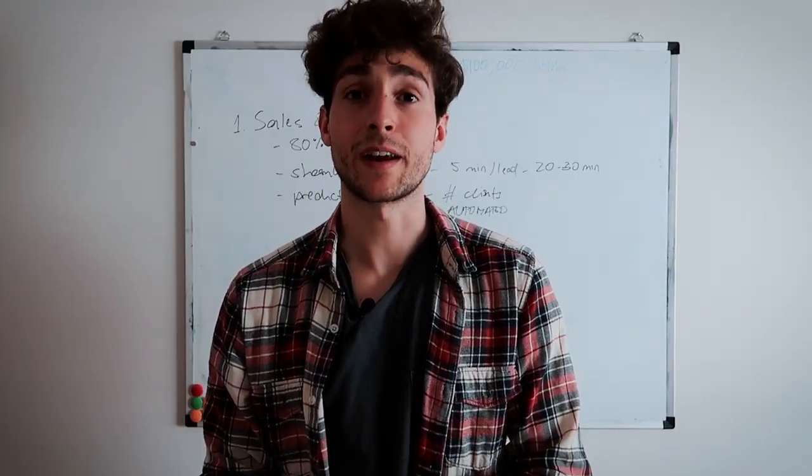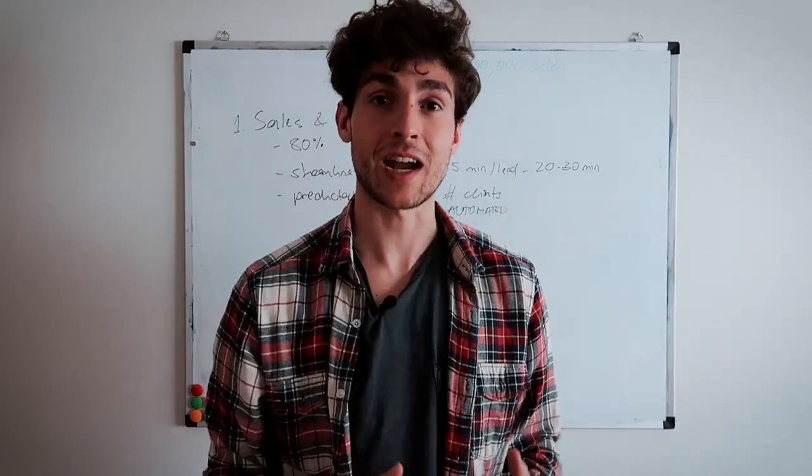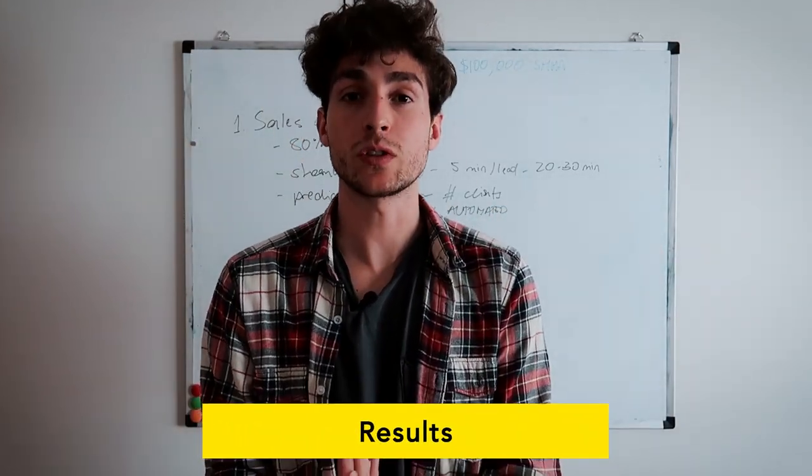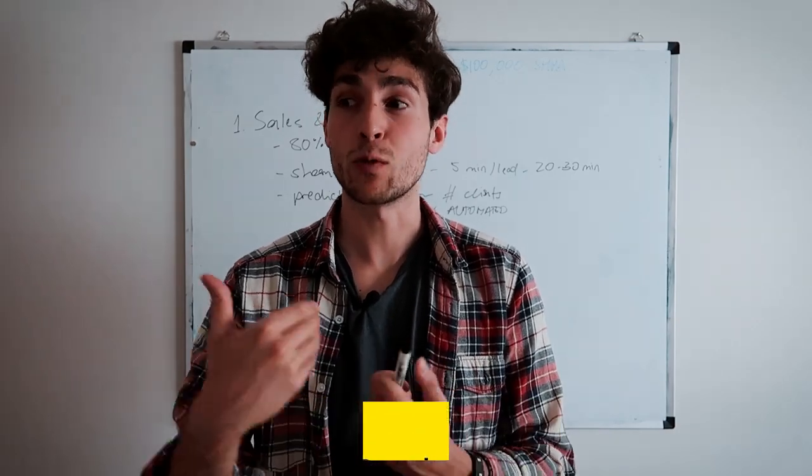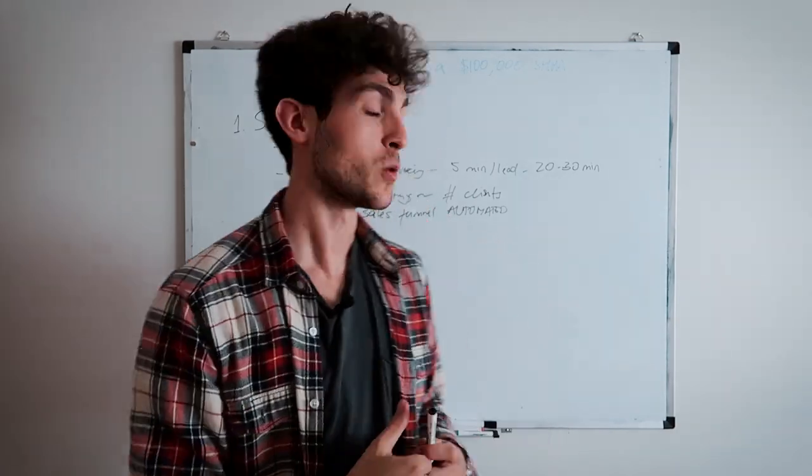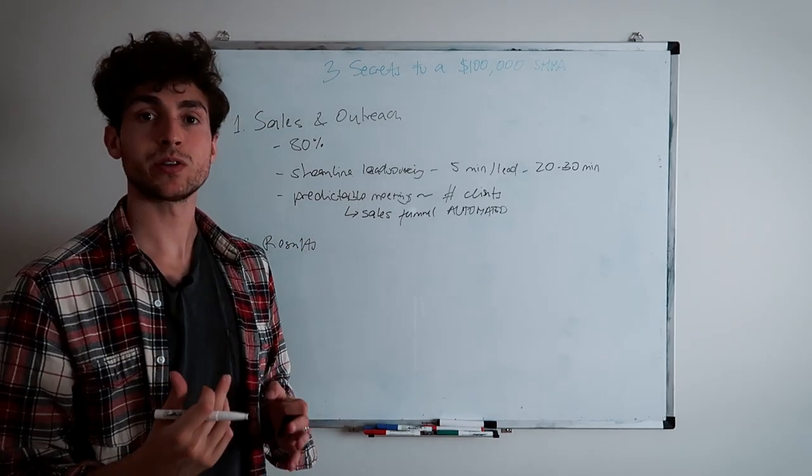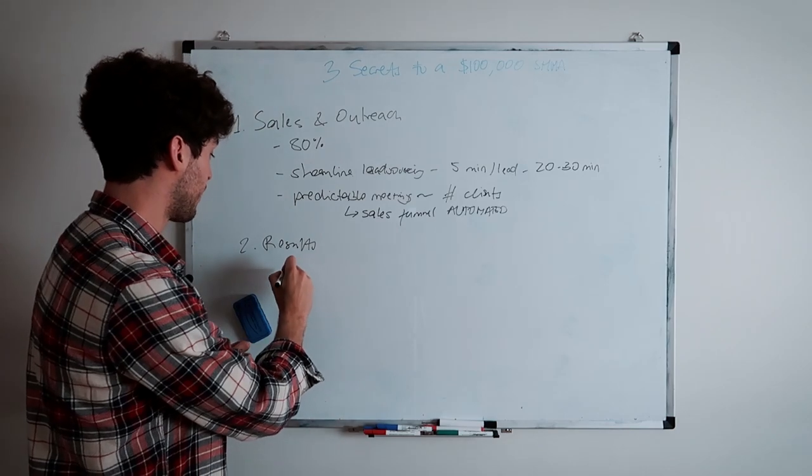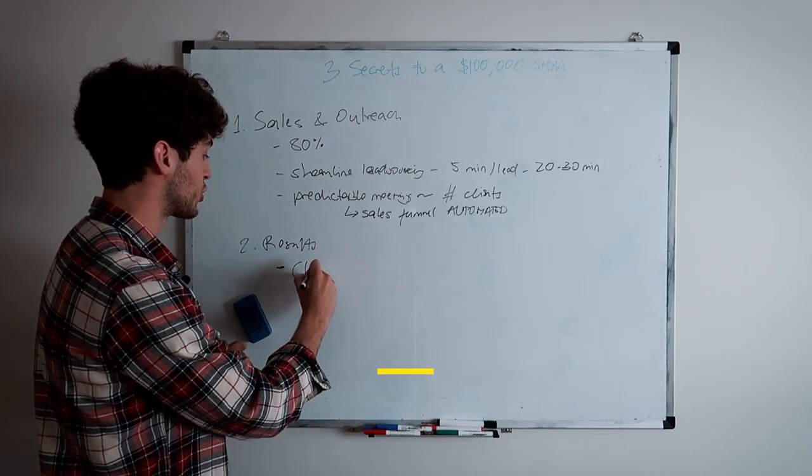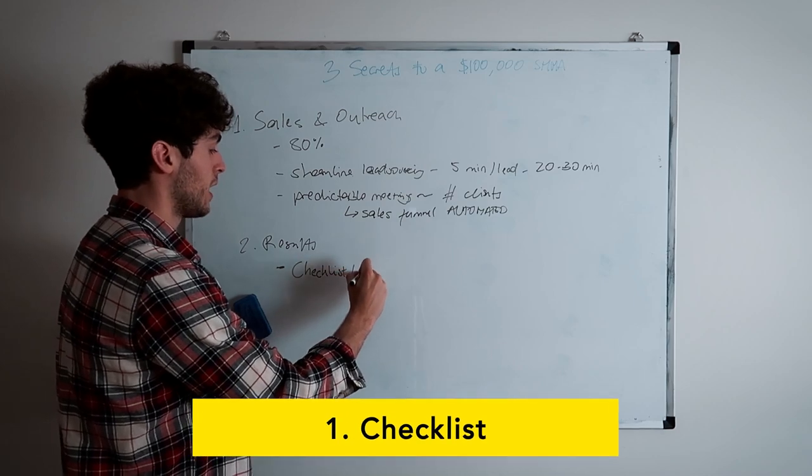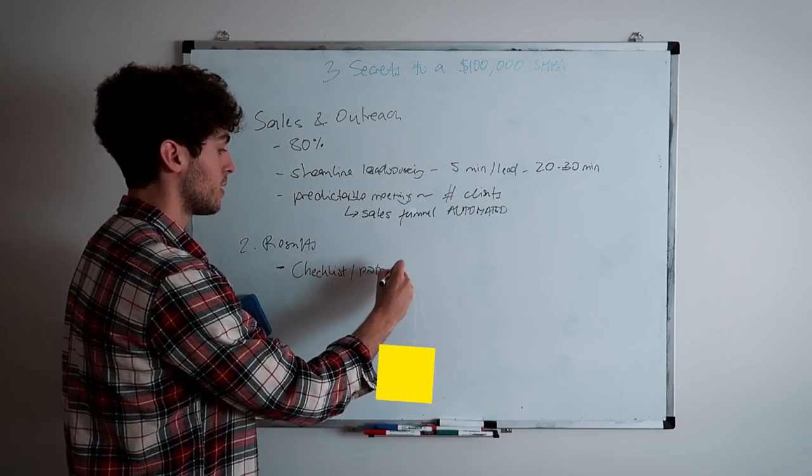The second key to building a six figure agency is making sure that the clients you do sign, once you have this in place, the clients you do sign, you can get them results so that they stay on for a long time and they refer you to other partners. And so the second thing is results. And the way we accomplish this is through mainly two things. The first thing you want to make sure you have is a checklist, a clear protocol process.